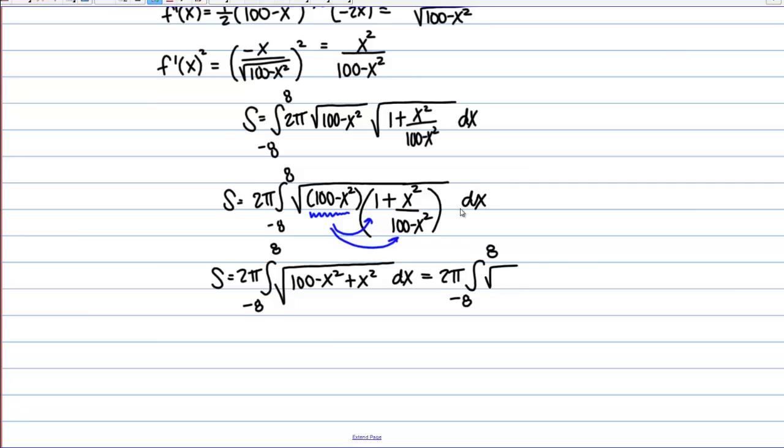Under the square root, I'm just left with 100. So I have 2 pi times the integral from negative 8 to 8 of 10 DX.